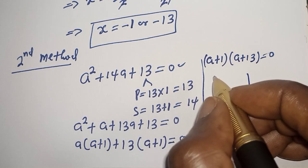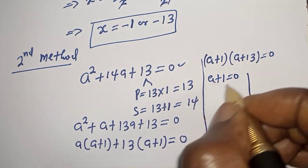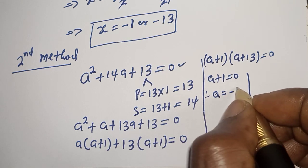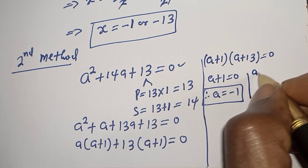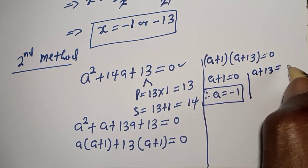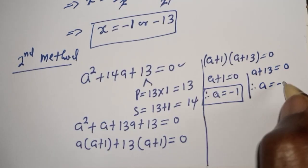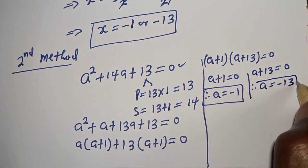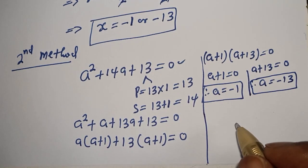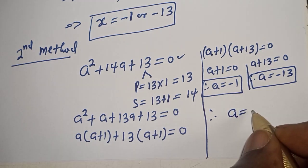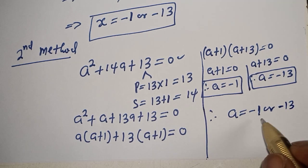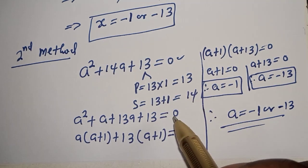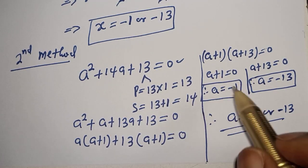Since (a plus 1) is common, we factor it out: (a plus 1)(a plus 13) is equal to zero. There are two cases. First case: a plus 1 equals 0, therefore a equals minus 1. Second case: a plus 13 equals 0, therefore a equals minus 13. So our final answer is a equals minus 1 or minus 13. You can see that this method is very fast. Before you leave, like, share, comment and subscribe. Thank you, bye bye.